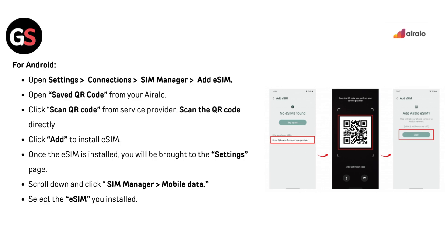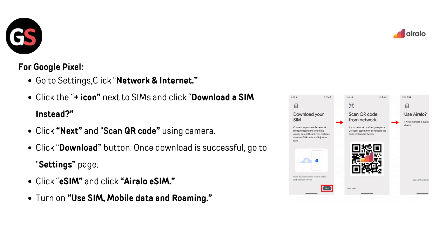Once the eSIM is installed, you will be brought to the settings page. Scroll down, click SIM Manager, then go to Mobile Data and select the eSIM you installed. For Google Pixel, go to Settings, click Network and Internet, click the plus icon next to SIMs, and click Download a SIM Instead. Click Next, scan the QR code using the camera, then click Download. Once downloaded, go to Settings, click eSIM, click the AirLo eSIM, then turn on Use SIM, Mobile Data, and Roaming.